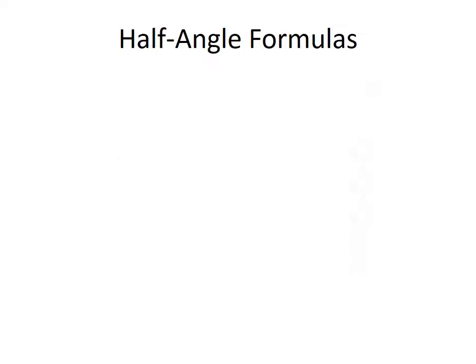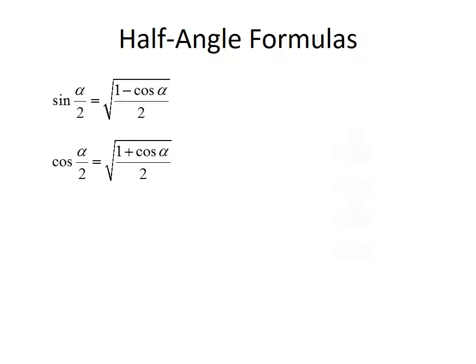We'll also list out the half angle formulas. The sine of alpha over 2 equals the square root of 1 minus cosine alpha divided by 2. The cosine of alpha divided by 2 equals the square root of 1 plus the cosine of alpha, all divided by 2. And the tangent of alpha divided by 2 is the square root of 1 minus cosine alpha divided by 1 plus the cosine of alpha.